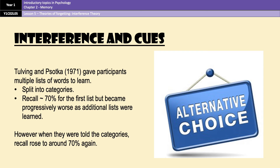As a final evaluation point, Tulving and Sotker from 1971 found that interference could be overcome by giving participants recall cues. Participants were asked to learn multiple word lists split into categories — for example, animals or jobs. Whilst recall decreased with every additional word list, recall increased again when participants were told the categories, which was information they didn't have initially. So that shows us that whilst interference can occur, it can very easily be overcome by using cues — which is a limitation of interference theory.